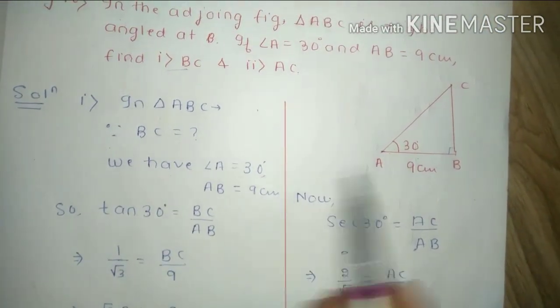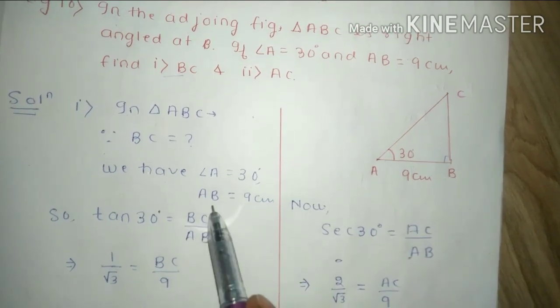We have angle A is equal to 30 degrees, AB is equal to 9 cm.